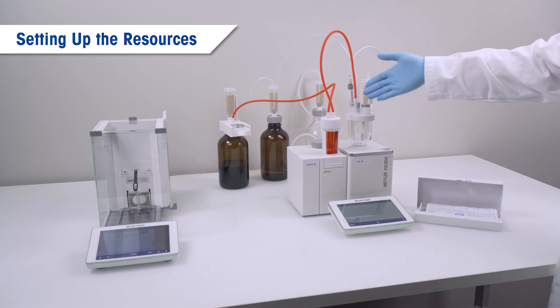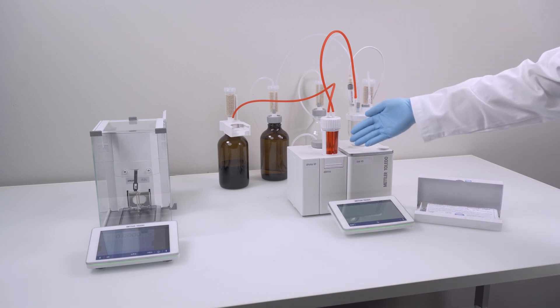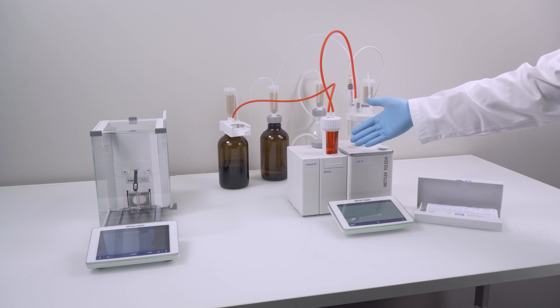Let's start with the setup of the resources that are needed for the concentration determination. The polarized sensor and the burette with the assigned titrant are automatically identified and created by the system upon connection. However, the KF cell and the concentration standard are not automatically set up and need to be manually configured to be used in the titration method later on.